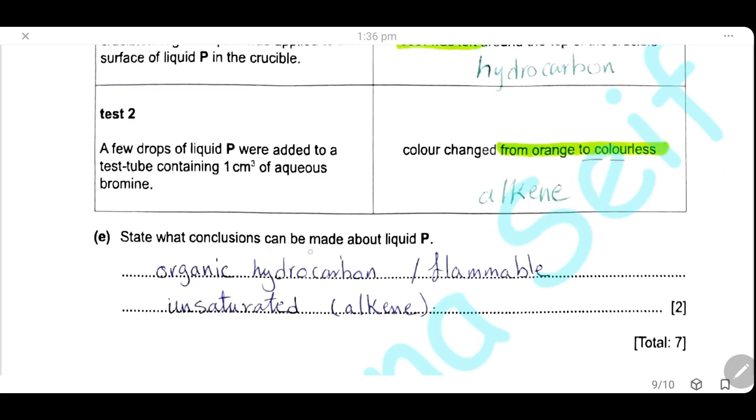State the conclusions that can be made about liquid P. Liquid P is an organic hydrocarbon and it is flammable, it is unsaturated or it is alkene.